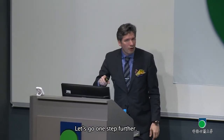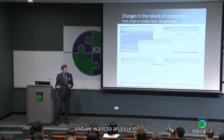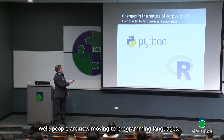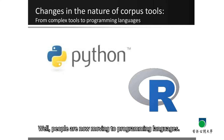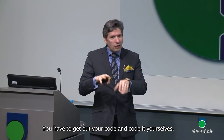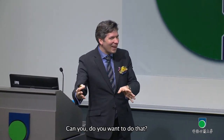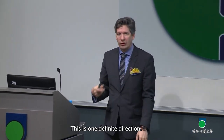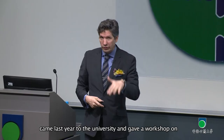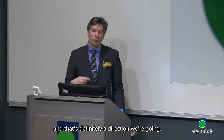If we have very complicated data and want to analyze it but don't have someone to program our interface, what do we do? People are now moving to programming languages — you have to program. It's kind of going back to the 1960s in some way; you have to get out your code and code it yourself. Stefan Gries, who is a strong proponent of R, came last year to the university and gave a workshop on how to use R to do analysis. That's definitely a direction we're going.